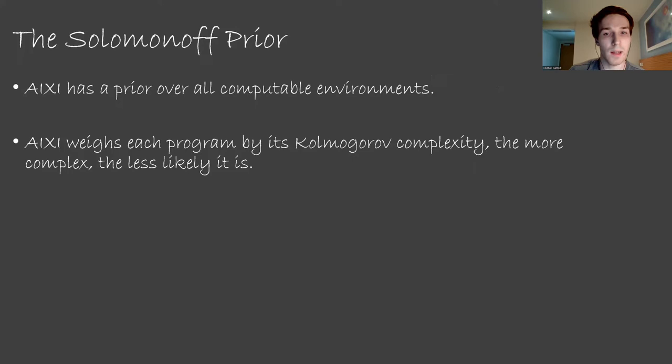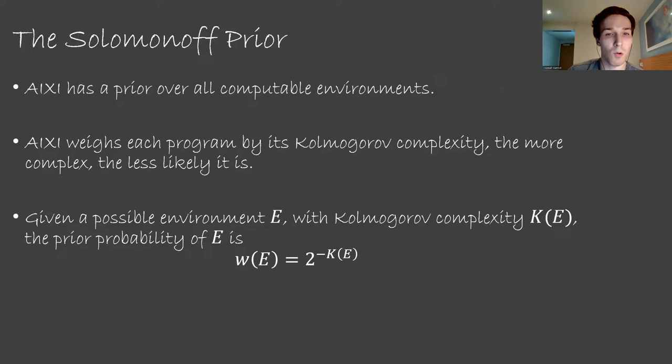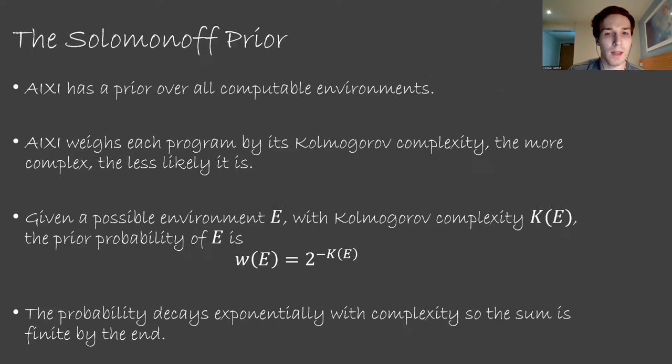ICSI is going to use Occam's Razor to weigh the different programs in the prior. Which ones are more likely or not? With no other information, let's weigh them by their Kolmogorov complexity. The more complex they are, the less likely they seem to be. So given some environment E with Kolmogorov complexity K(E), we allocate a prior probability of 2^(-K(E)). So the bigger K is, the smaller this number will be.